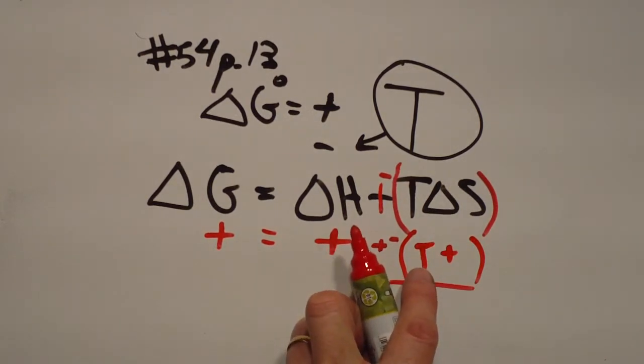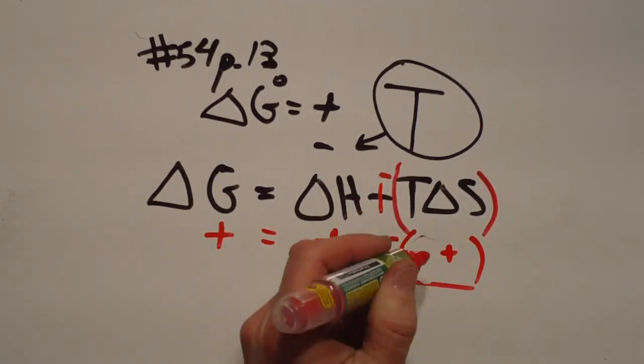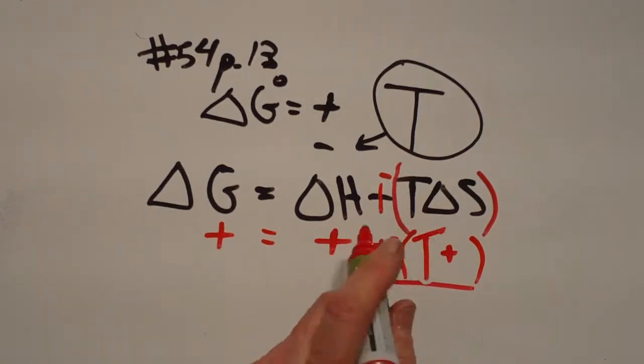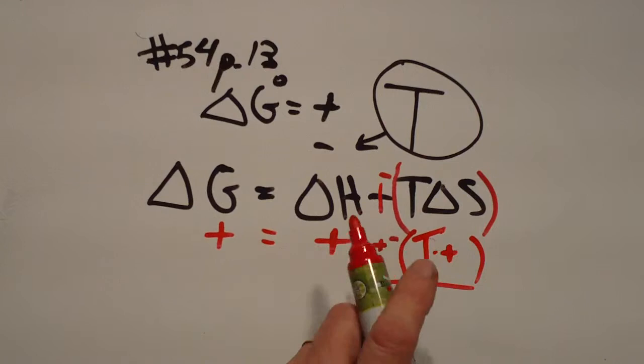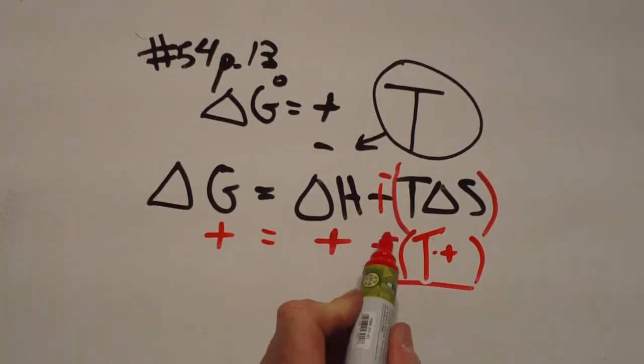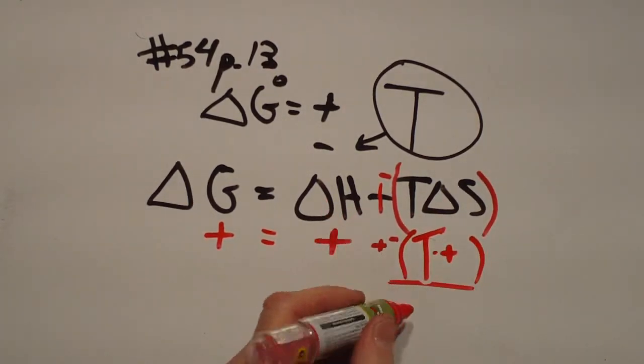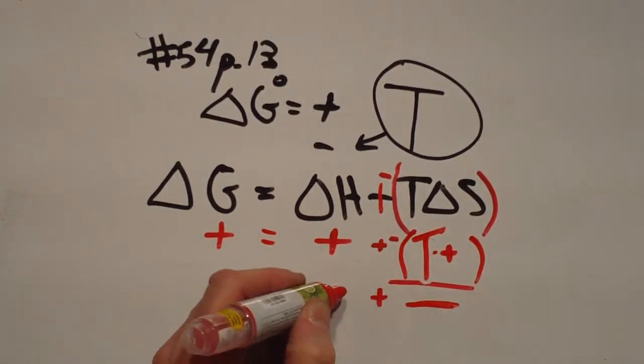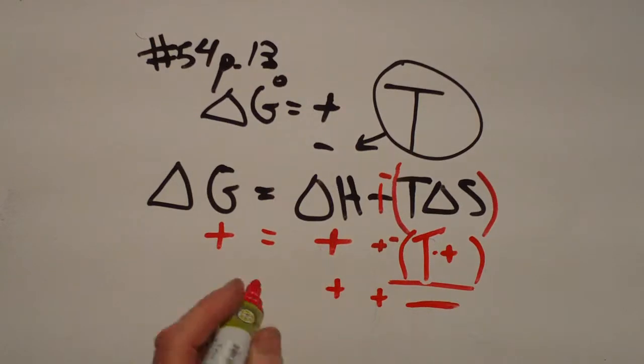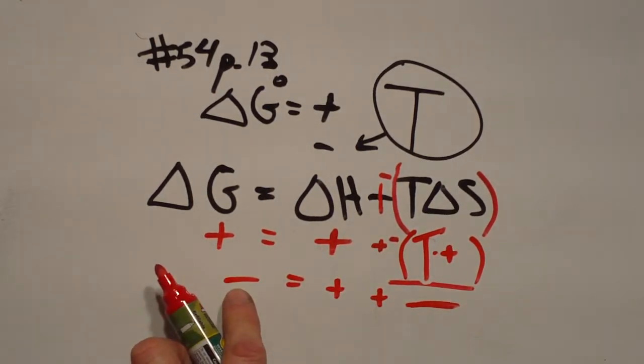However, when you increase the temperature here, if you make the temperature big enough, then this small positive number, times a large temperature, makes this term here negative, very large. Very large negative. And when you add that to a smaller positive, that throws delta G into the negative form.